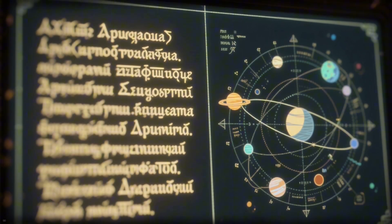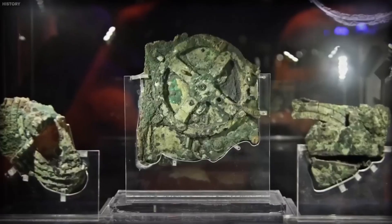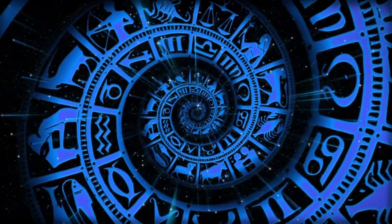Each phrase described cycles, alignments, and patterns of movement. The moon, the sun, the planets, even eclipses. In that moment, the impossible became undeniable. This corroded relic wasn't a trinket or ornament. It was a mechanical cosmos.